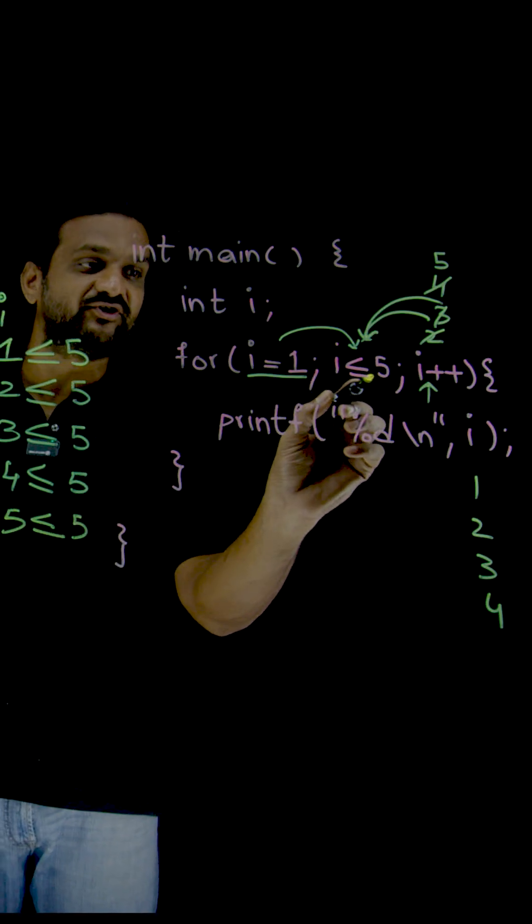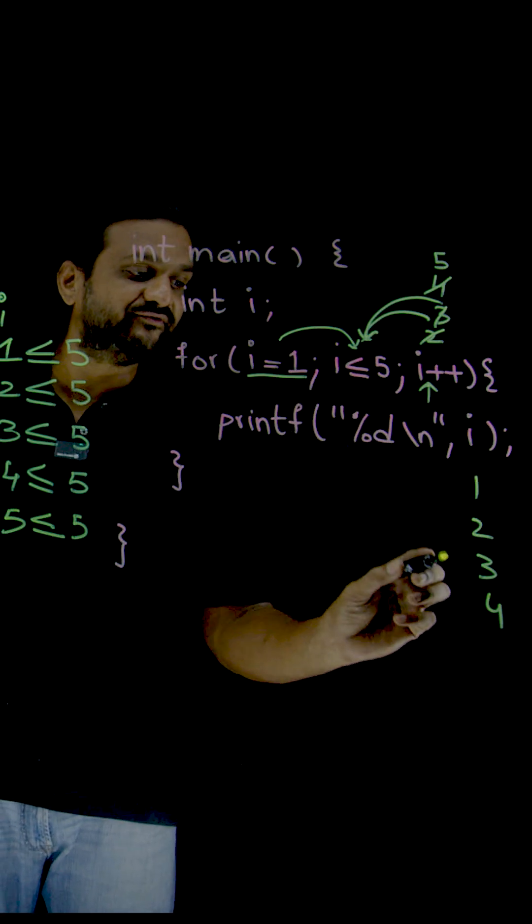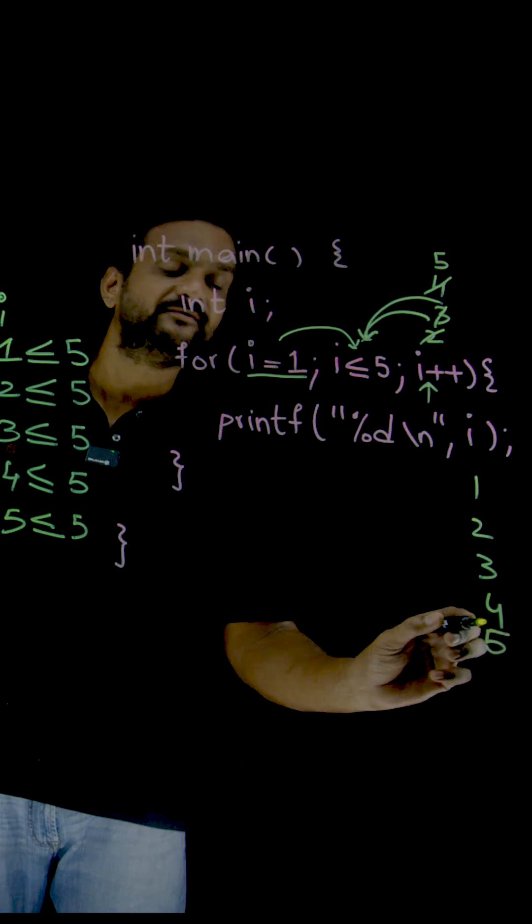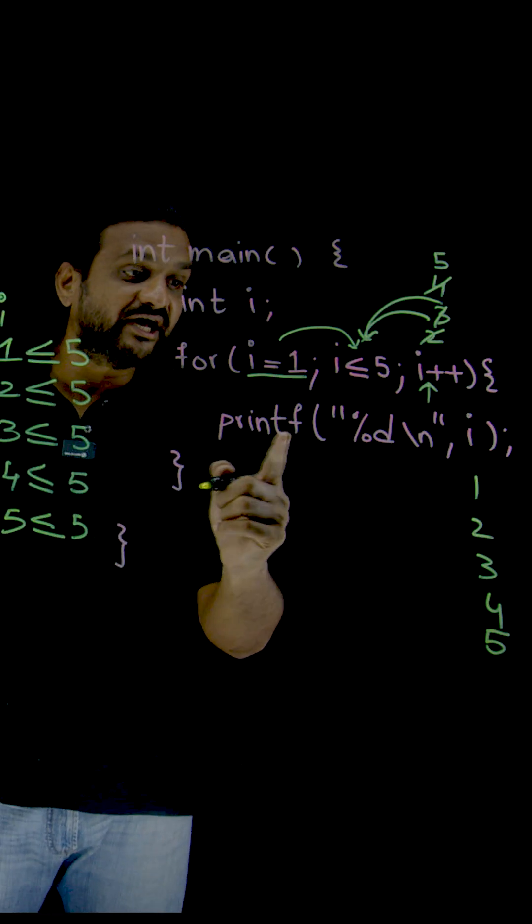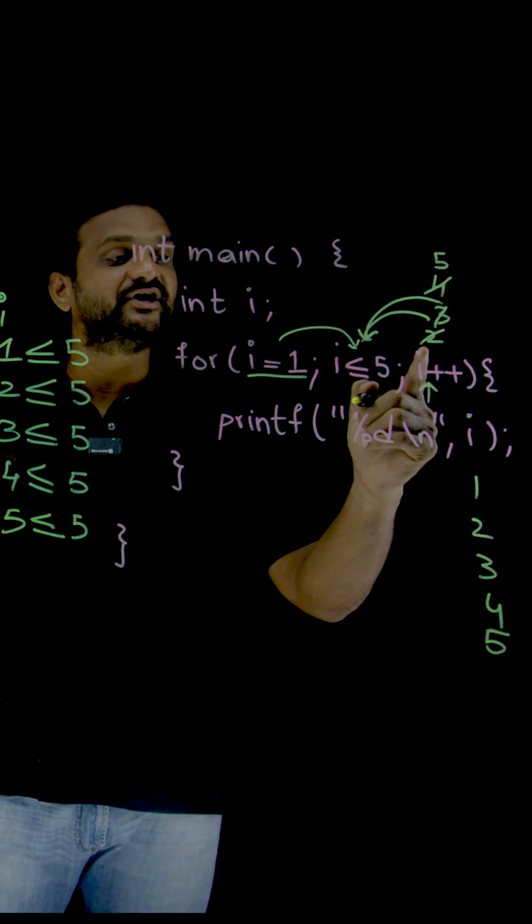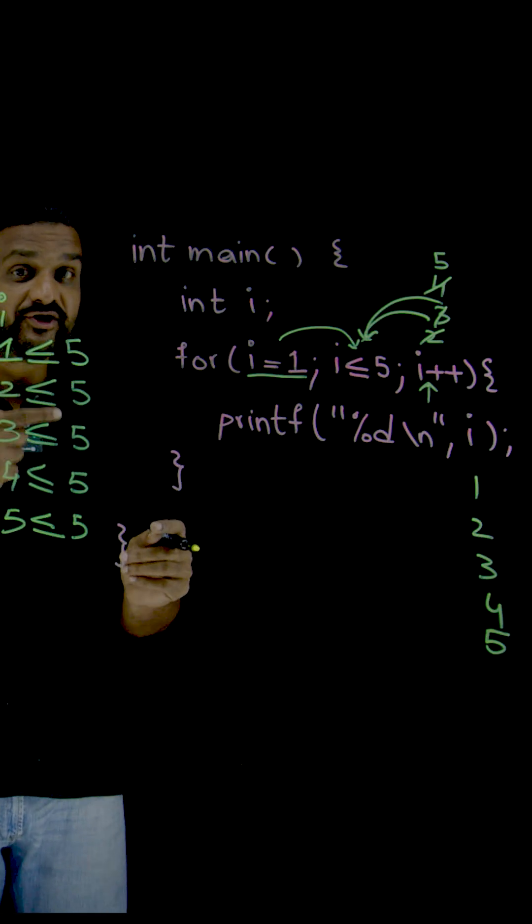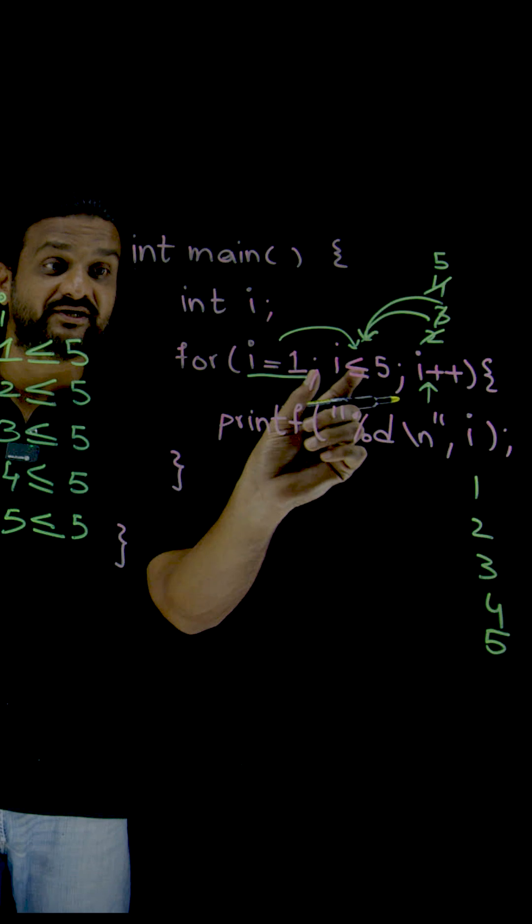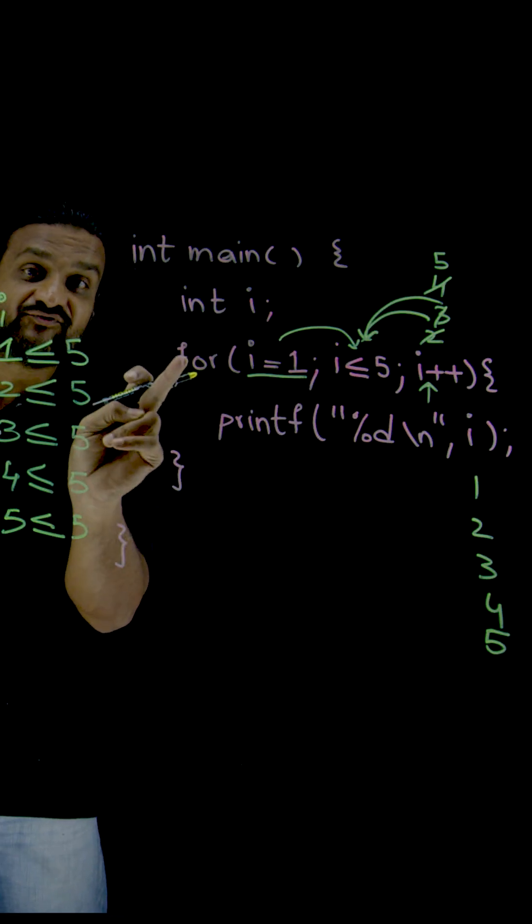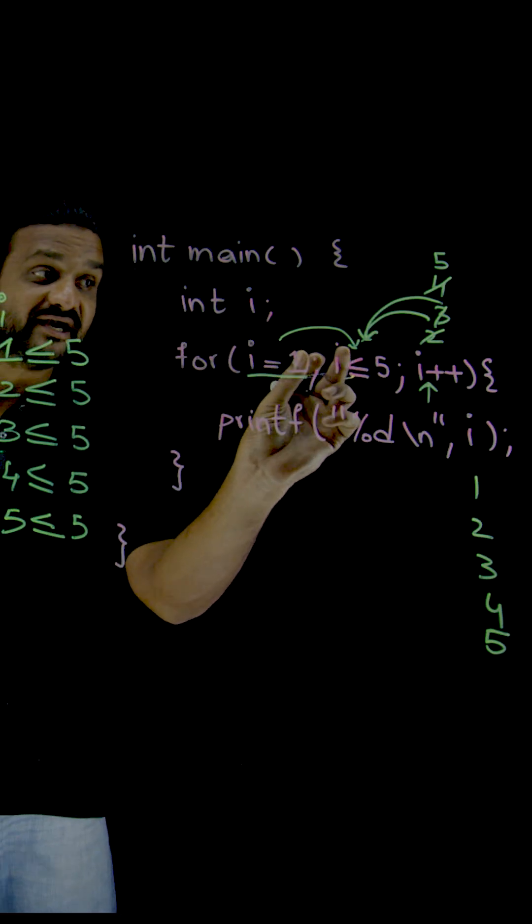This condition is true. We are going to come into this loop and we are going to execute print 5. And next iteration. So as we are done with all the statements, this is very important. See here. Again we are going to increment. So the decision is made by this conditional statement. Whether to iterate into this for loop again or not, that decision is made by this conditional statement.